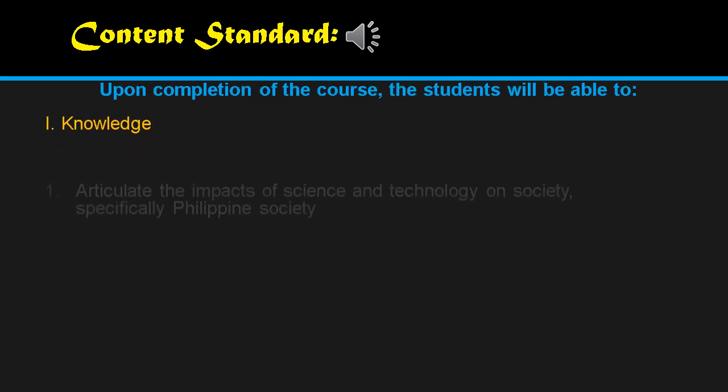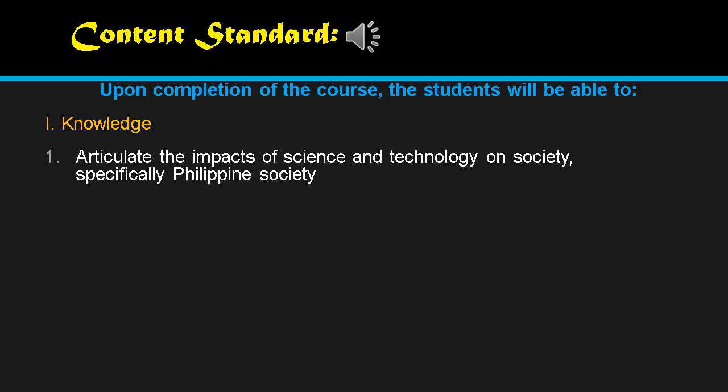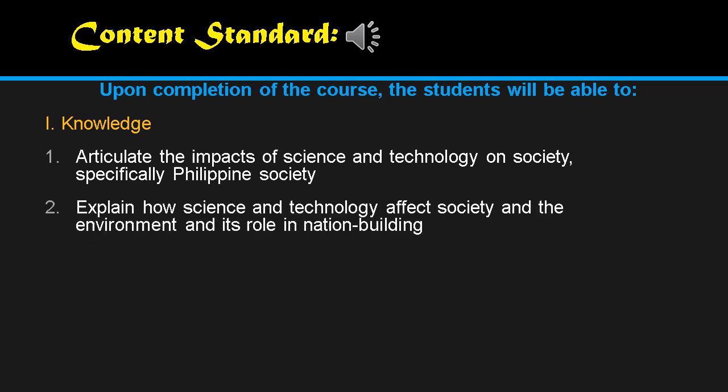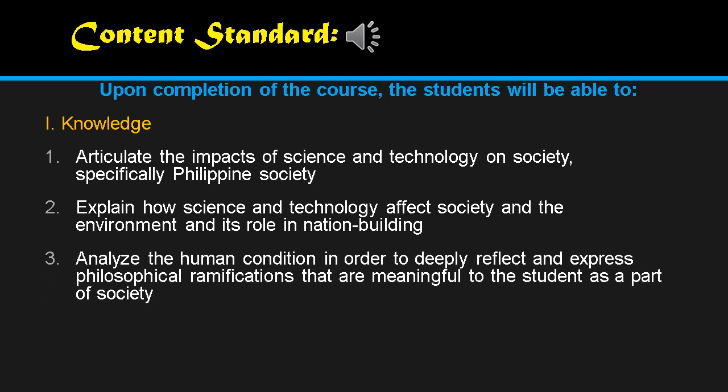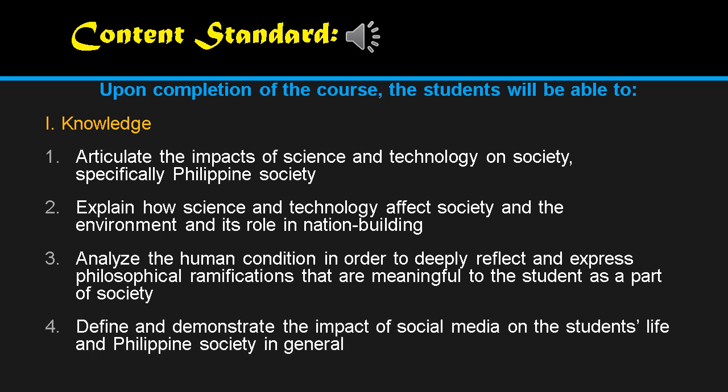For the content standard, upon completion of the course, students will be able to do the following. First, acknowledge and articulate the impacts of science and technology on society, specifically Philippine society. Second, explain how science and technology affect society and the environment and its role in nation-building. Third, analyze the human condition in order to express philosophical ramifications meaningful to students as part of society. Fourth, define and demonstrate the impact of social media on students' lives and Philippine society in general.